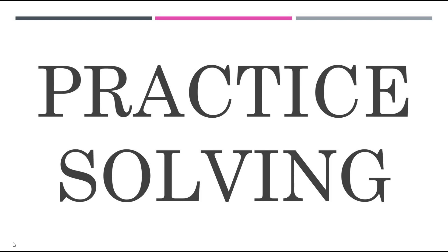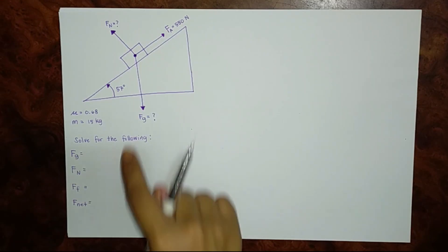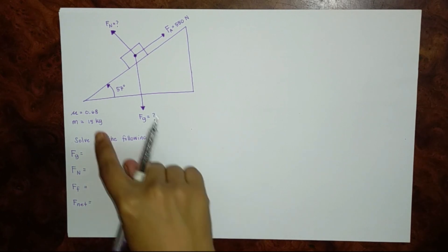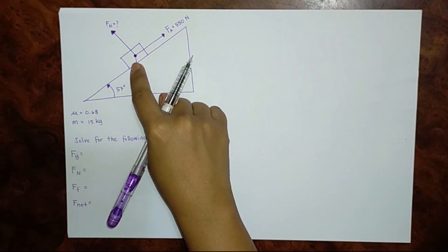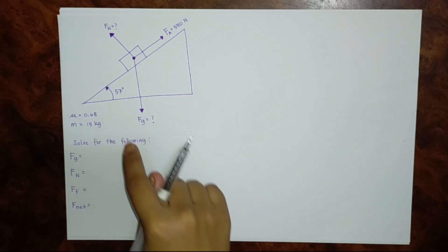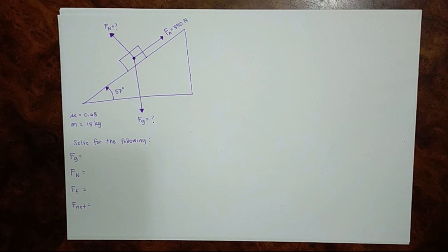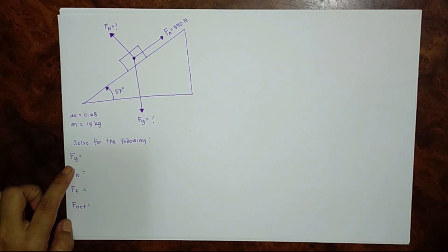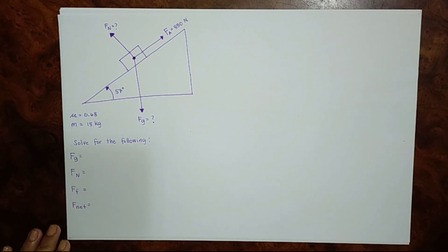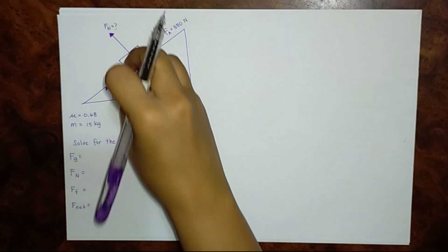In this video, we are going to study how to determine the different forces and the net force of the free body diagram. In the illustration, we have a body which is equal to 15 kilograms. This object is being applied with a 550 newton force going upward on a ramp which is 57 degrees from the ground. The question is: how much is the gravitational force, the normal force, the friction force, and the net force acting on the body?